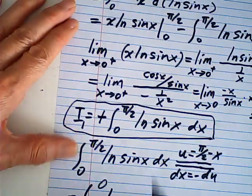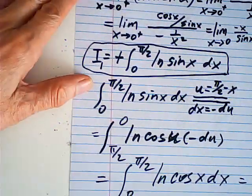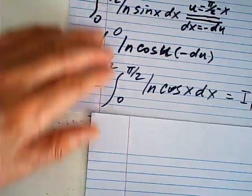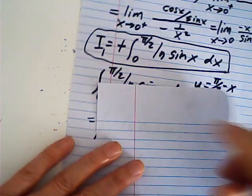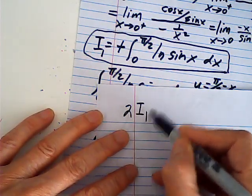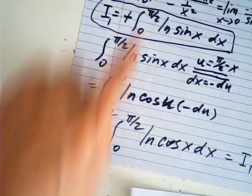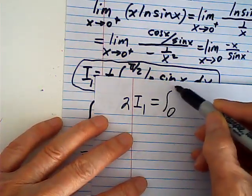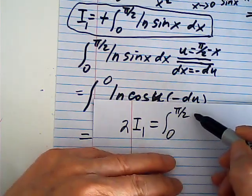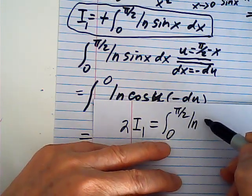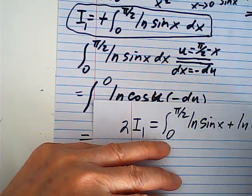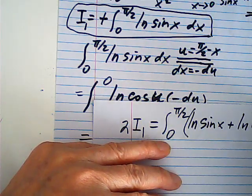So log sine and log cosine give the same integral. Therefore 2I₁ equals the integral from 0 to π/2 of natural log(sin x) plus natural log(cos x) dx.